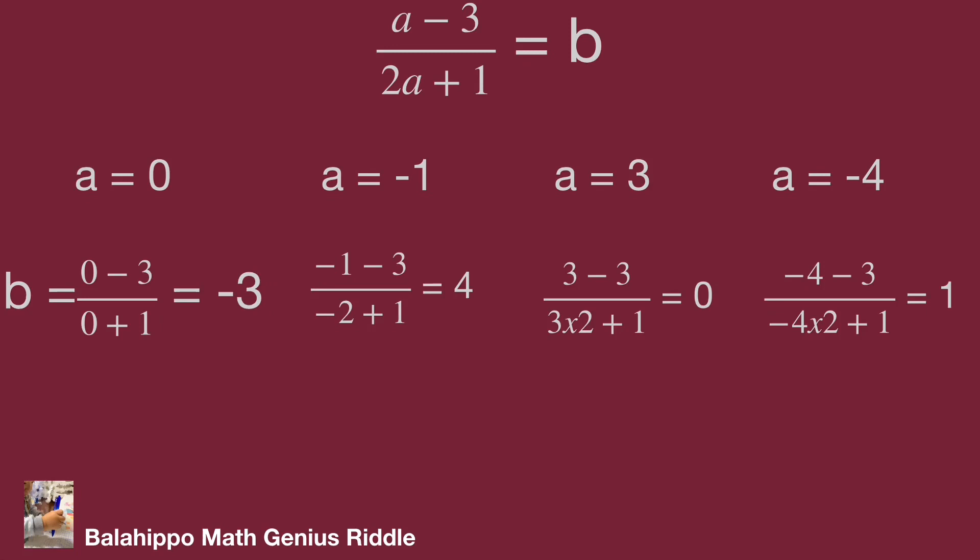So b is all integers. Therefore, a equal to 0, minus 1, 3, and minus 4 is the correct result.